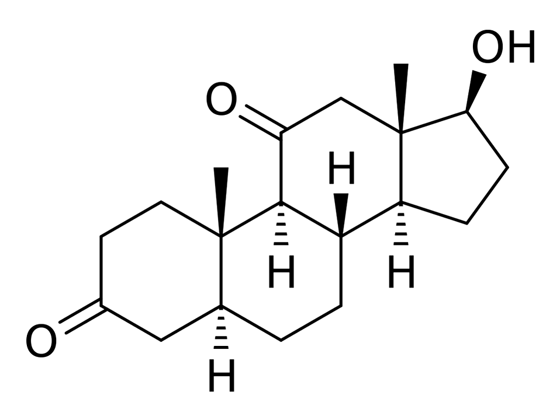11-Ketodihydrotestosterone, 11-KDHT, also known as 5-alpha-andristan-17-beta-OL-3-11-deone, is an endogenous, naturally occurring steroid and androgen prohormone that is produced primarily, if not exclusively, in the adrenal glands.